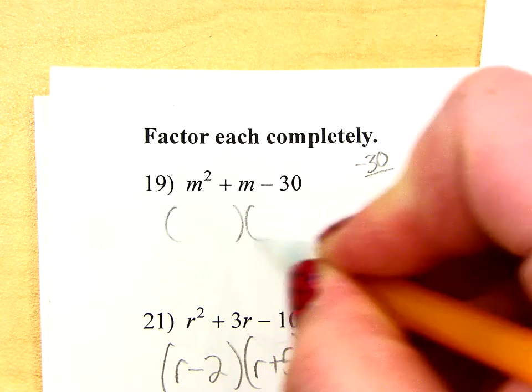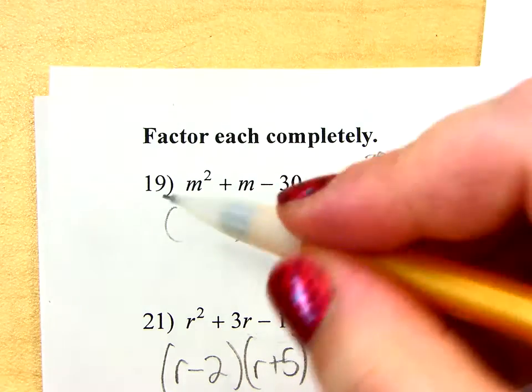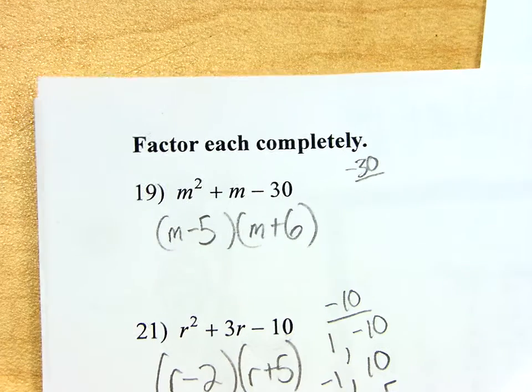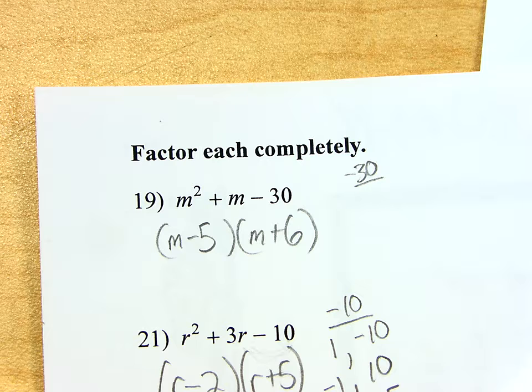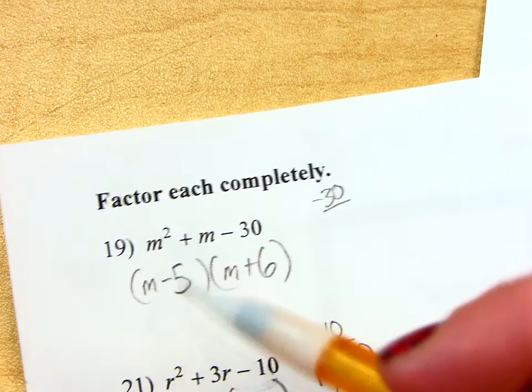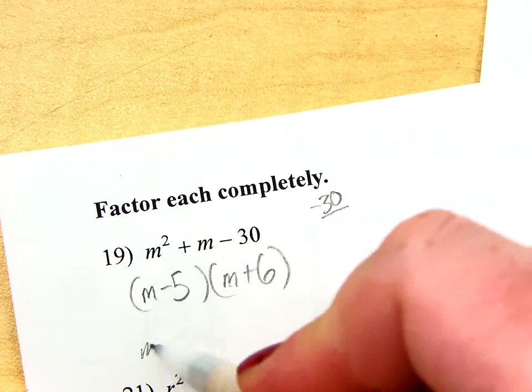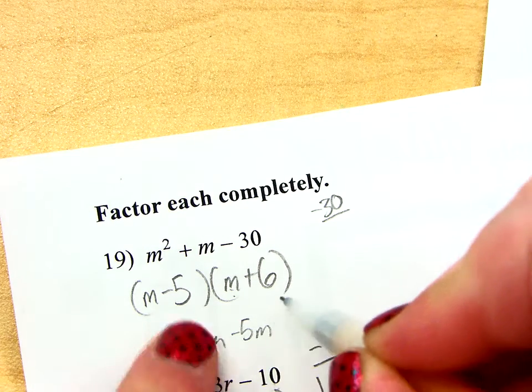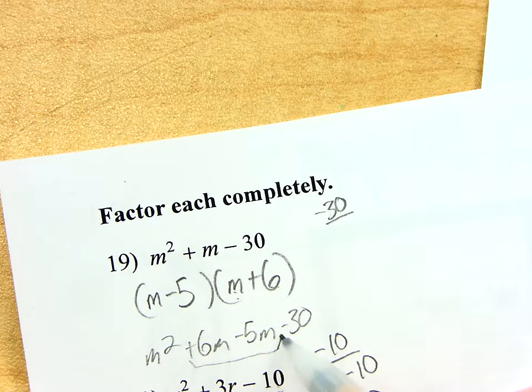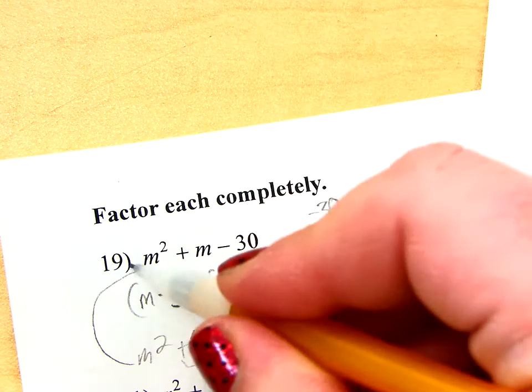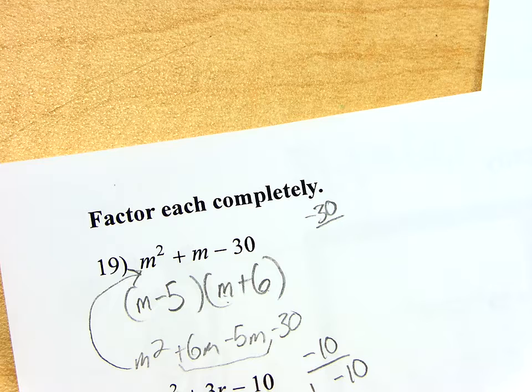Okay. We got an answer? Yeah. Kristen, go ahead. Perfect. Yes. So, if you foil it back, right? First, M squared, outers, plus 6M, inners, minus 5M, and then last, negative 30. So, when you combine these two, doesn't that leave you with a positive 1M? Yeah. So, after you combine the like terms, it'll leave you right back where you were. Good.